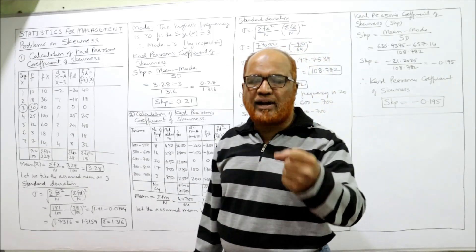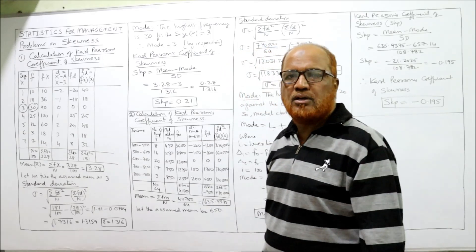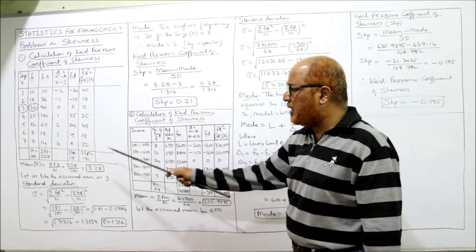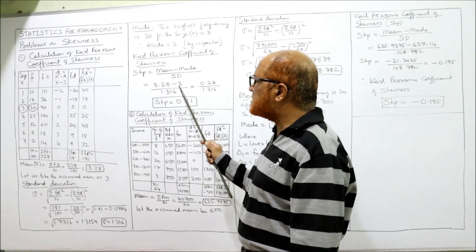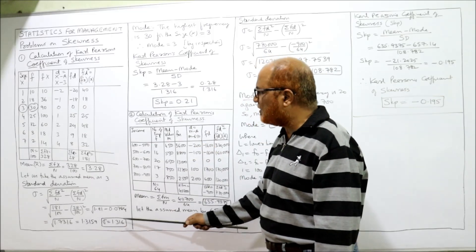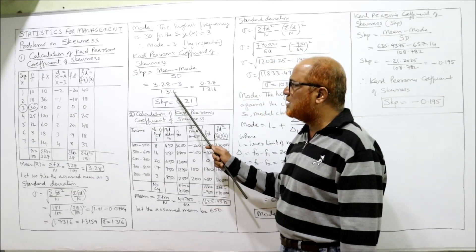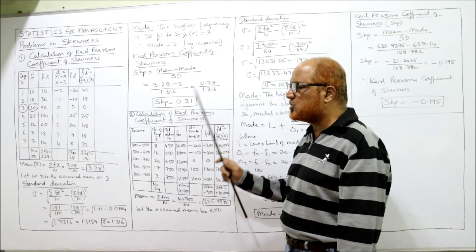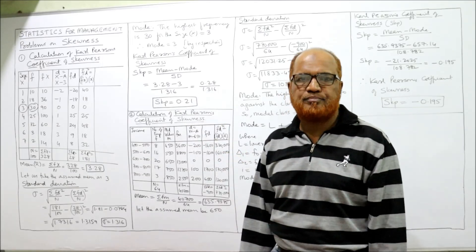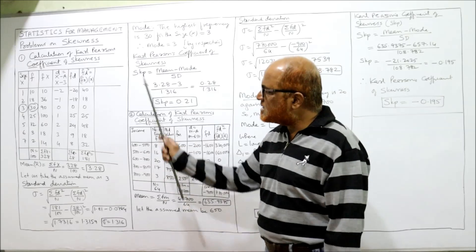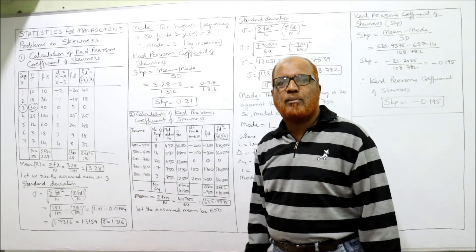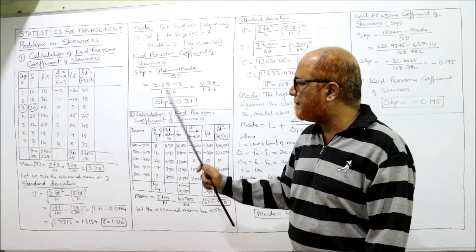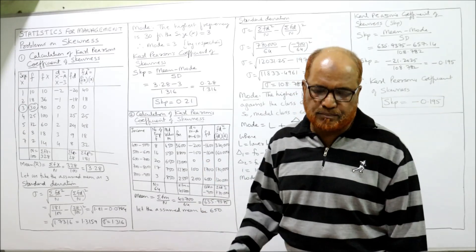Now applying the formula: SKP = (Mean − Mode) / Standard Deviation = (3.28 − 3) / 1.316 = 0.28 / 1.316 ≈ 0.21. The coefficient of skewness is +0.21, which is positive. That completes the first problem on calculating the coefficient of skewness.